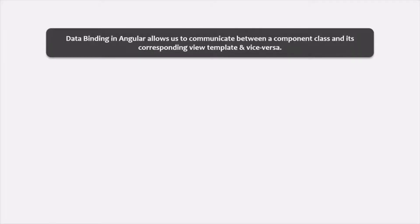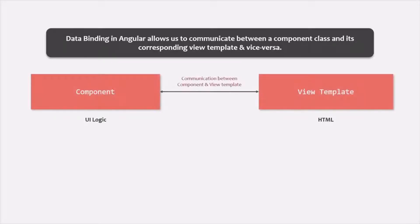Data binding in Angular allows us to communicate between a component class and its corresponding view template and vice versa. When we create a component, we need to define a component class and we also need to define a view template for that component class. The two important parts of a component in Angular are the component class and its corresponding view template. The component class contains the UI logic and the view template contains the HTML which gets rendered in the browser wherever that component is used. The communication between this component class and the view template is called data binding. In more simple terms, the flow of data from component class to view template or from view template to component class is called data binding.